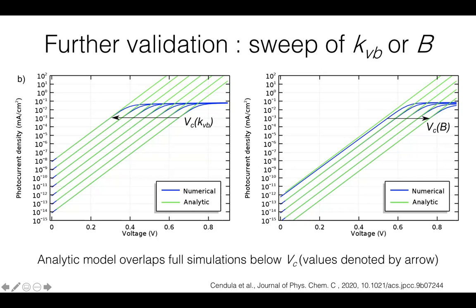Similar validation holds for the change in the recombination constant B in five orders of magnitude in the direction of the arrow. And also the critical voltage here nicely overlaps from the analytic and numerical model.